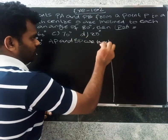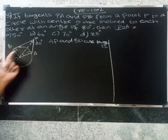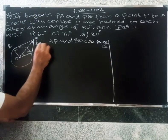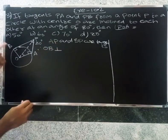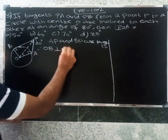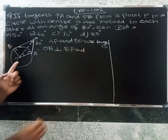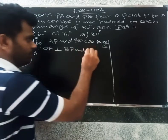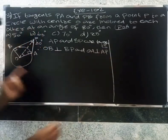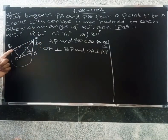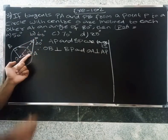AP and BP are tangents. They meet OB. Therefore, OB is perpendicular to BP and OA is perpendicular to AP.